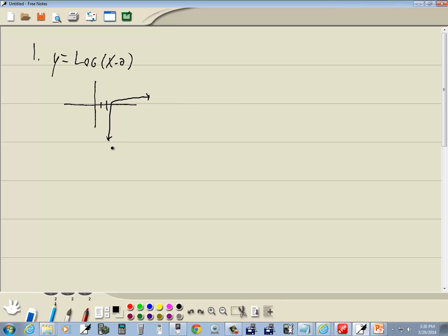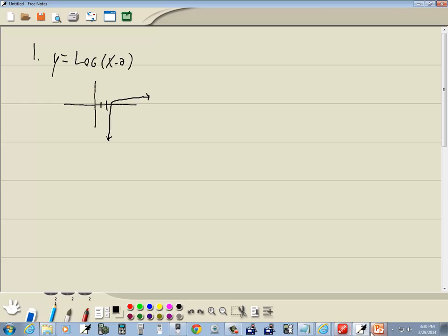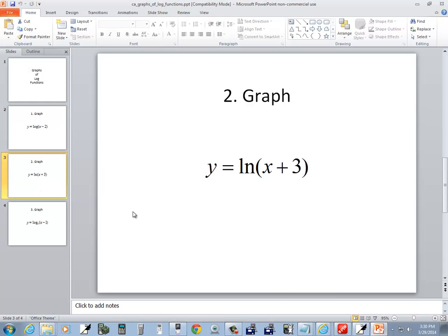This keeps going down forever. It's skimming this, getting closer and closer to it, but never touching it, never crossing it. So that should be our answer. I'm looking more like this, but continuing down forever. Okay. Let's look at this one.